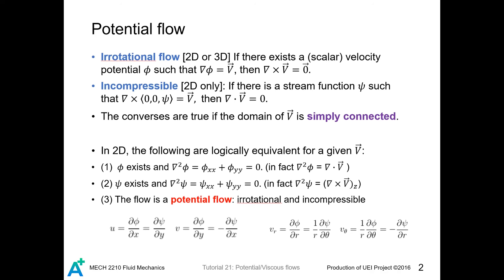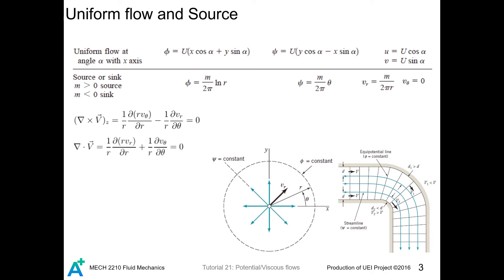Being potential is a strong requirement on a flow. The flow has to be both irrotational and incompressible. The simplest kind of potential flow is uniform flow. Differentiating a constant is zero, so the incompressible and irrotational requirements are always satisfied.